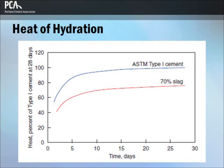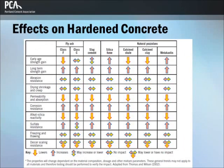The majority of supplementary cementing materials typically have a lower heat of hydration than Portland cement. This table provides an overview of the hardened concrete properties that SCMs affect and their degree of influence. As with fresh concrete, the properties will change dependent on the material composition and dosage along with other mixture parameters. These general trends may not apply to all materials, and therefore testing should be performed to verify the impact.